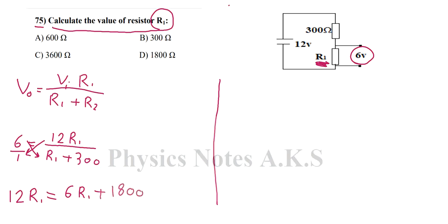Now I take this 6 R1 to the other side, it's going to be 12 R1 minus 6 R1, which equals 1800. So here is going to be 6 R1 equals to 1800.